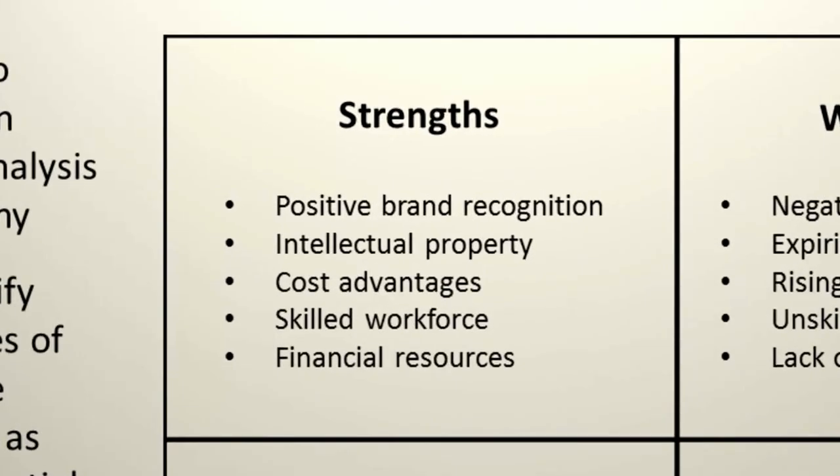Strengths and weaknesses are considered to be internal factors because the company usually has some control over what they're good at and what they're not so good at. A strength is something that the company does that provides itself a competitive advantage — something that no other company does better than them. For example, a company like Walmart, one of their largest strengths is the fact that they can maintain very low costs, which allows them to price their products much lower than competitors, because they can demand concessions from suppliers given their large purchasing volume.